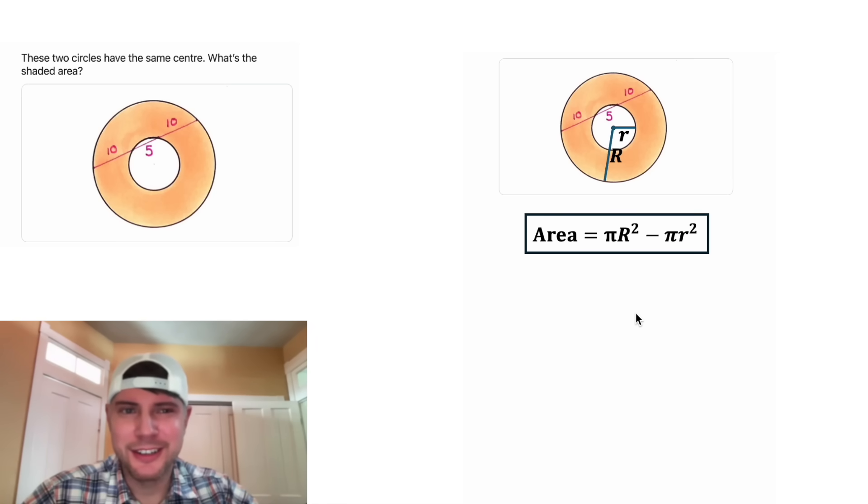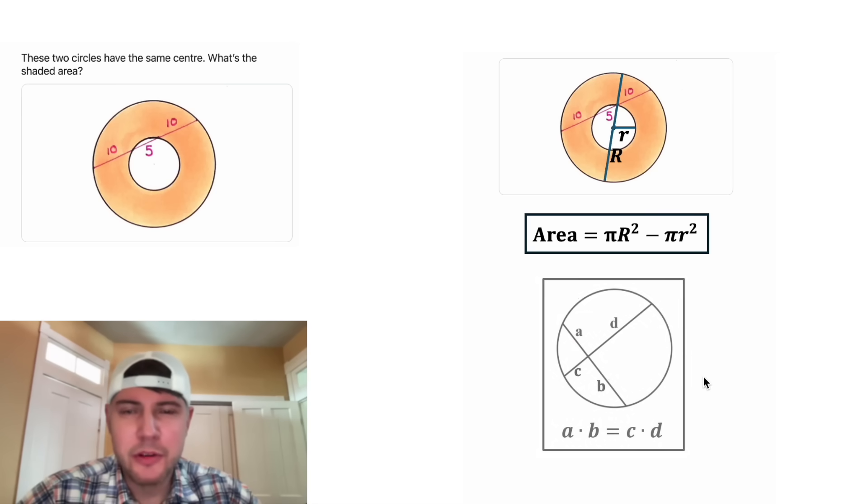For the next step, we were already given this chord and we can make another chord right here. This reminds me of the intersecting chords theorem. It says for any two intersecting chords in a circle, the two chords will always cut each other such that this times this equals this times this.